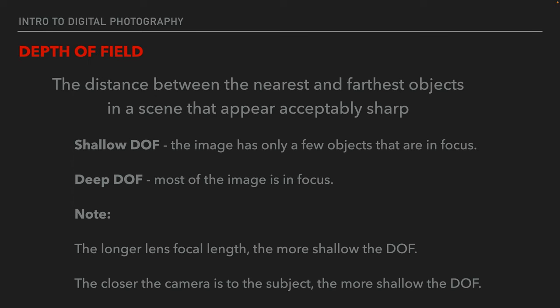Aperture affects our depth of field — the distance between the nearest and farthest objects in a scene that appear acceptably sharp. They may not be perfectly sharp, but they're going to feel sharp enough. Shallow depth of field means only a few objects are in focus; the distance between nearest and farthest is very shallow. Deep depth of field means most of the image is in focus. A couple of other things affect depth of field: not just the size of the opening, but a longer lens will have shallower depth of field, and the closer the camera is to the subject, the shallower the depth of field will be.